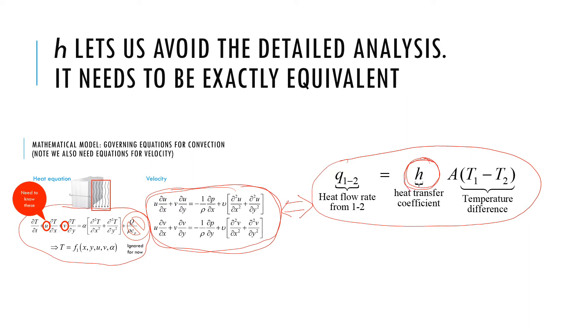So right there, we know one thing, that h is not a material property because it has all the flow details and heat transfer details also included in there. So how do we define this h so that it is exactly equivalent?